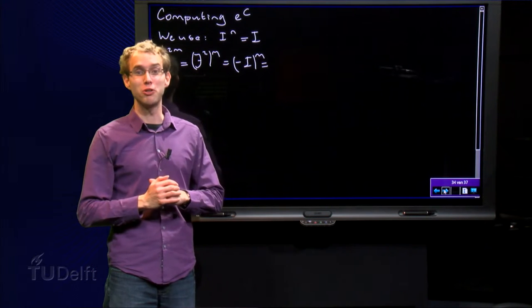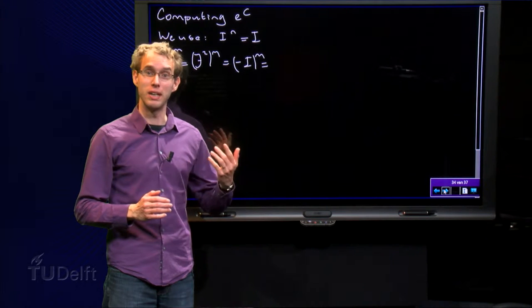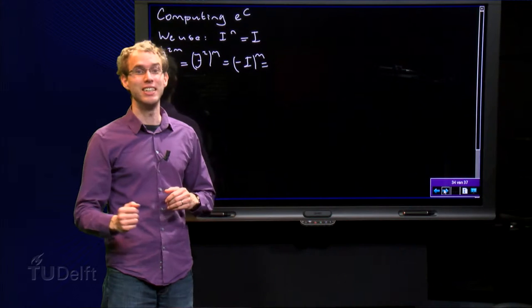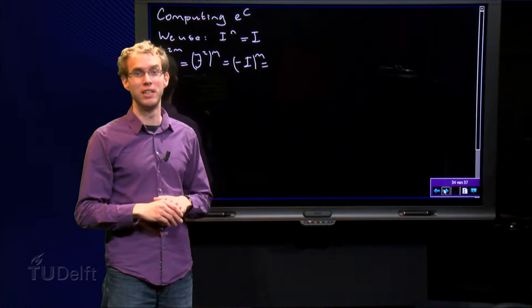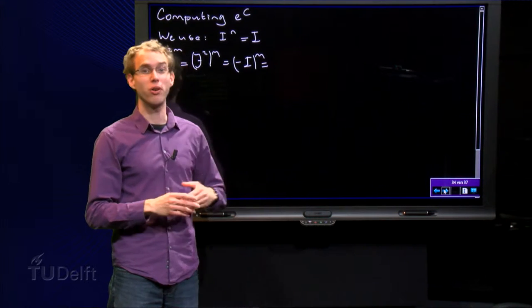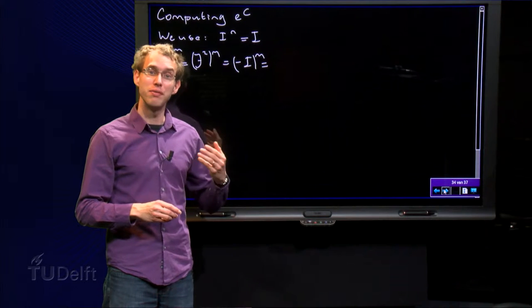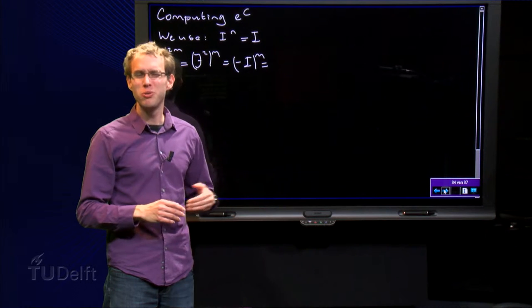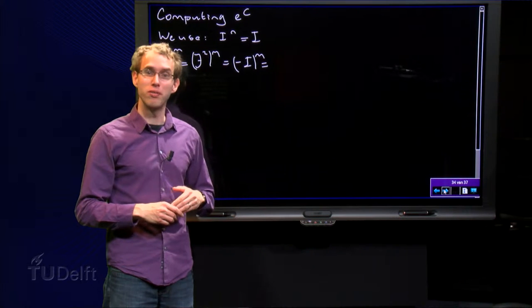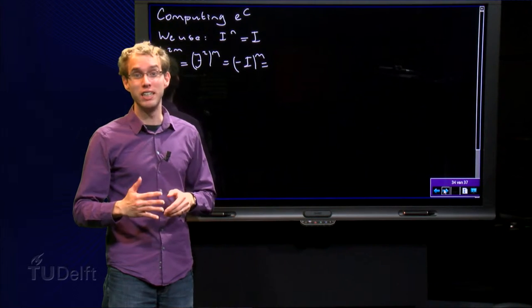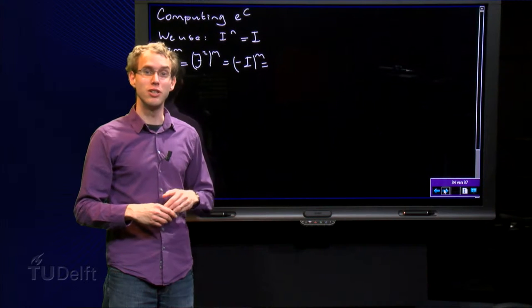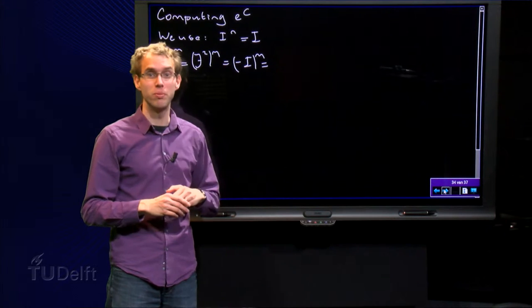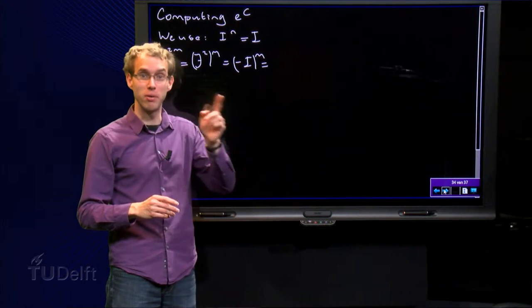We now know how to compute e to the power a when a is either d or similar to d. This happens to be not difficult at all. But what if a is c, or maybe similar to c? It should not be too hard. For e to the power d we only needed to compute powers of d, so since we are already able to compute powers of c, we should also be able to compute e to the power c.